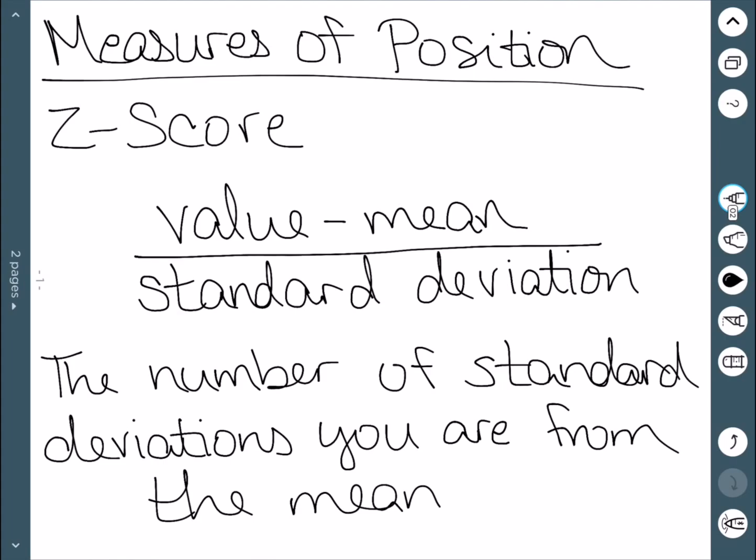We can have positive and negative z-scores. A negative z-score means we're below the mean, and a positive z-score means we're above the mean.